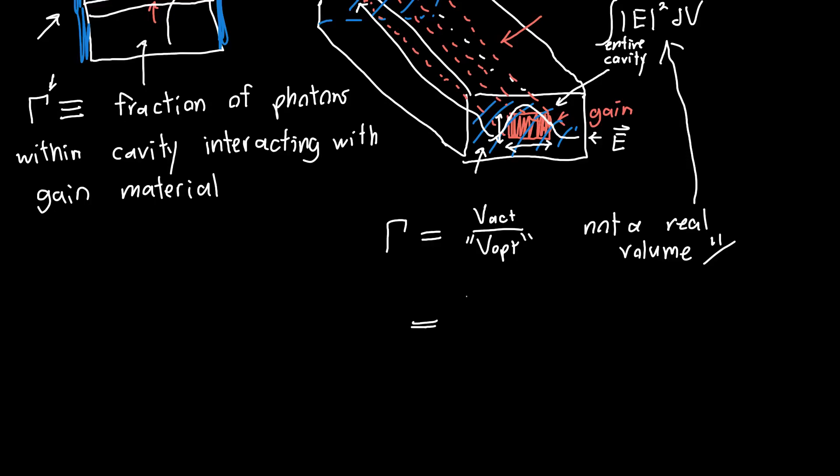And confusingly, it's also written as the active region volume divided by the total cavity volume. And strictly speaking, this is wrong. So this is straight up wrong. But it's actually very easy to calculate because you have the geometry, presumably, of the device that you're trying to analyze. And you can just calculate with basic geometry the active region volume divided by the cavity volume. And so this is a popular first approximation of gamma. But it's not, strictly speaking, correct. And it's often grossly wrong.